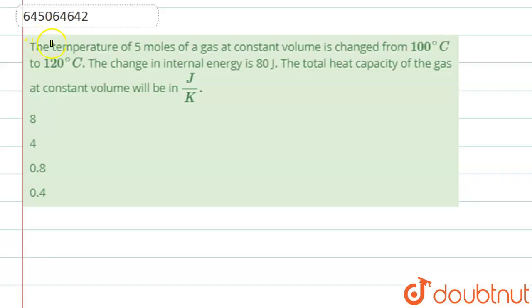Hello students, now we're going to see this question. The temperature of 5 moles of gas at constant volume changes from 100 degree Celsius to 120 degree Celsius. The change in internal energy is 80 joules. The total heat capacity of the gas at constant volume will be in joule per Kelvin.